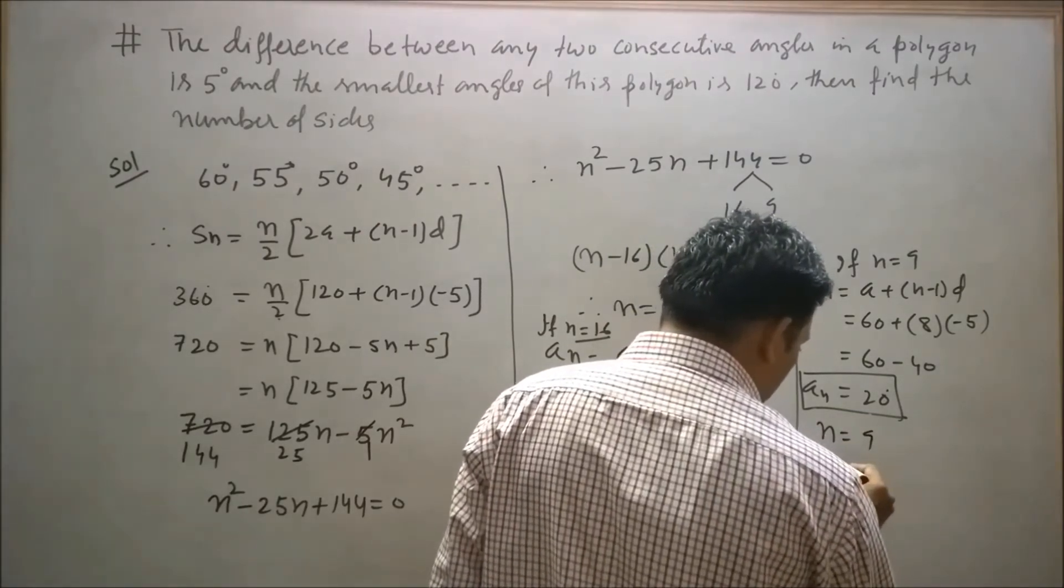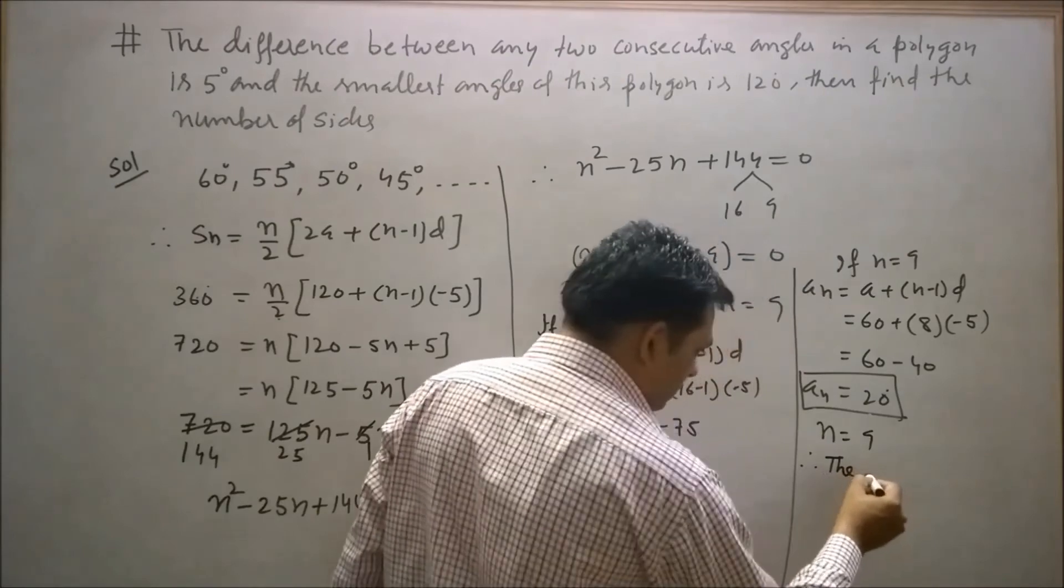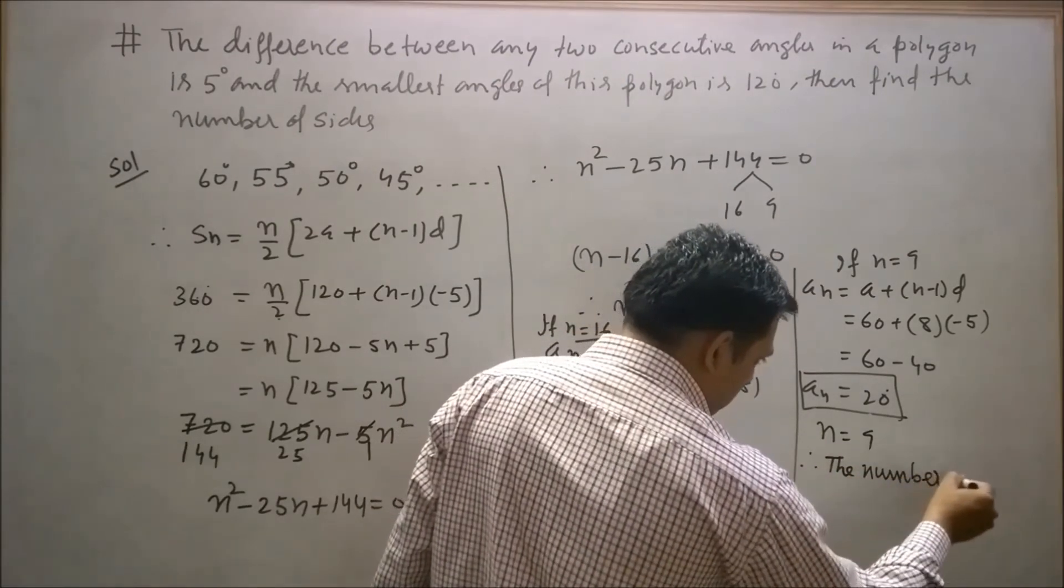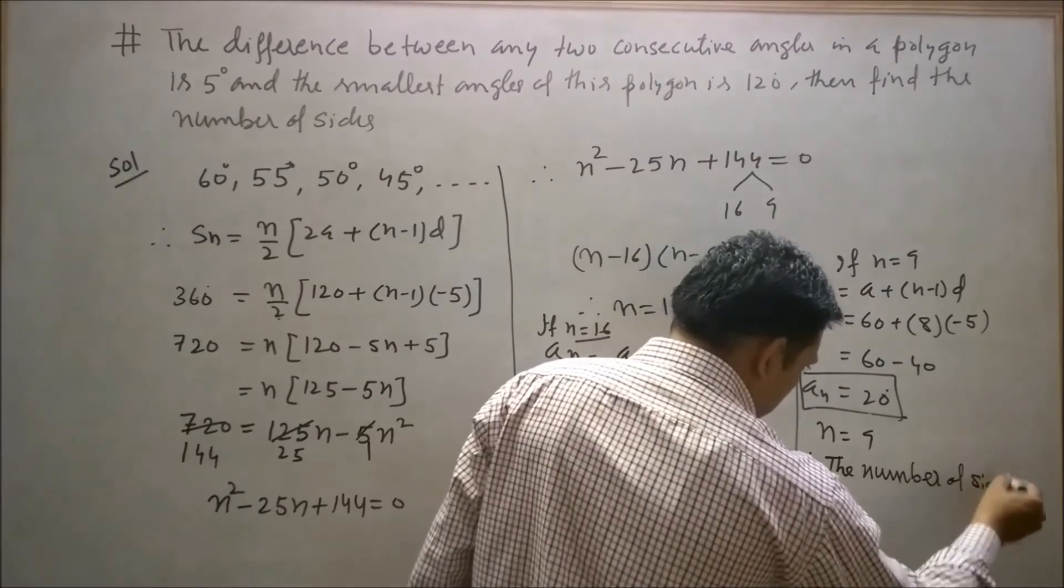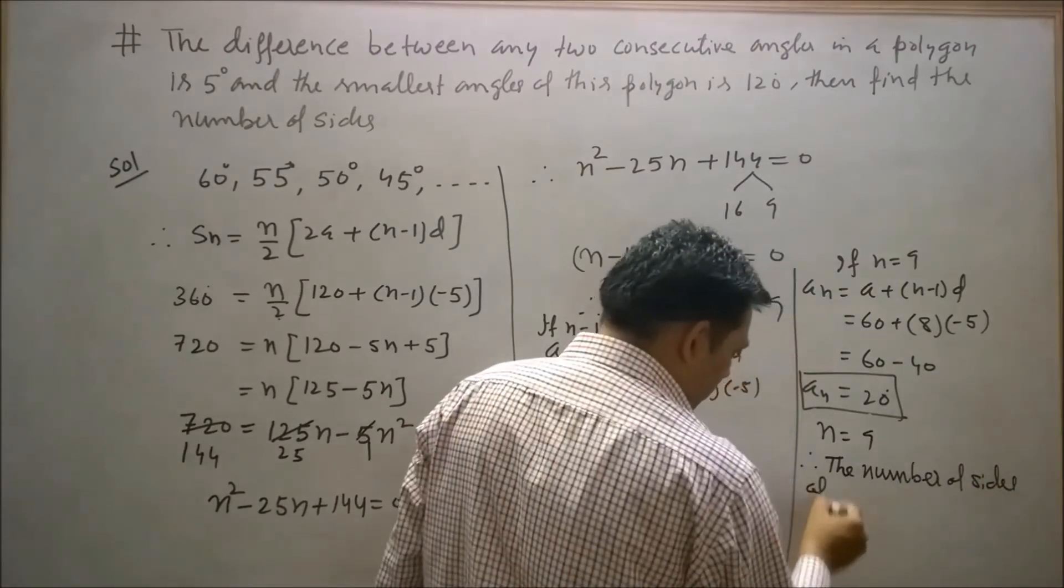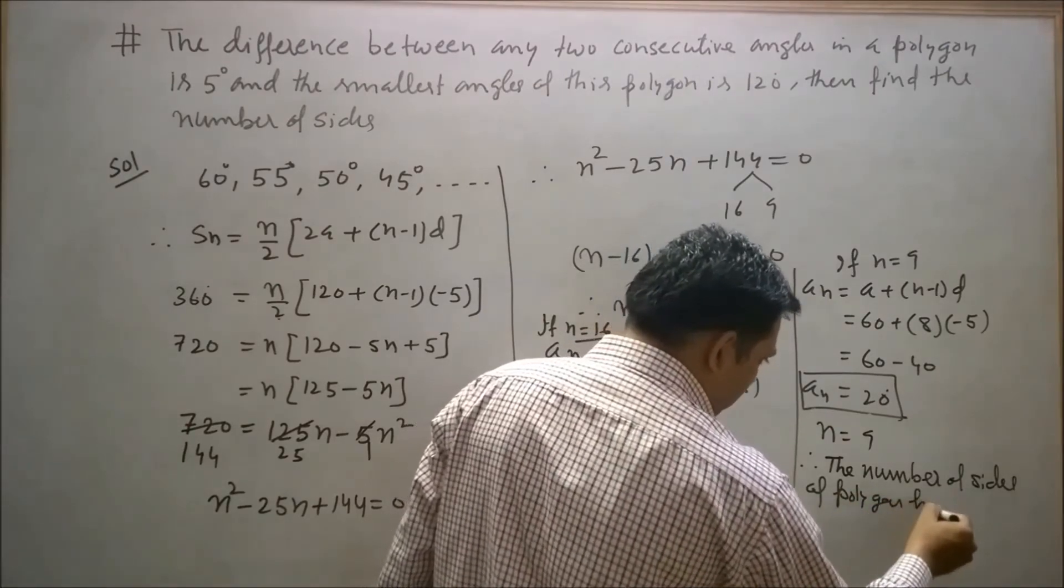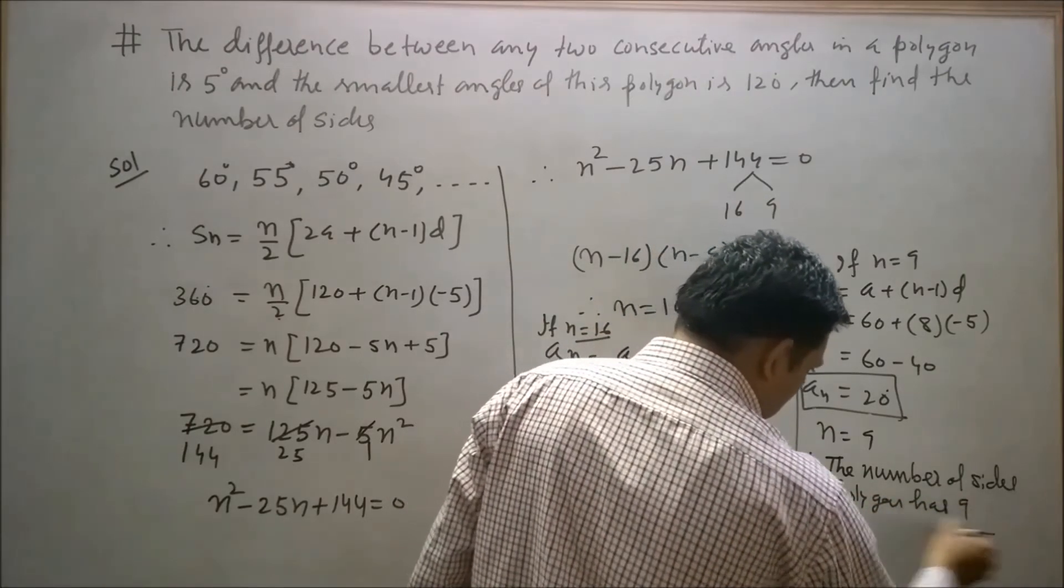So the number of sides of the polygon is 9.